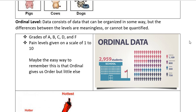Grades are ordinal. Pain levels from 1 to 10. In fact, when you're talking about ordinal level, it's the easiest to remember just to think it gives you order but little else.